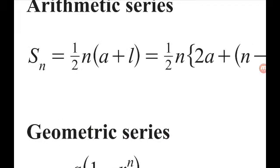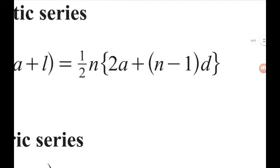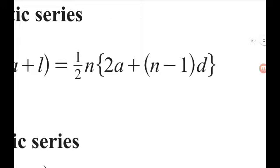We are given the formula for the sum of an arithmetic sequence. So it's one half n times a plus l, or one half n times 2a plus n minus 1 times d. So that's the one that we are going to use.